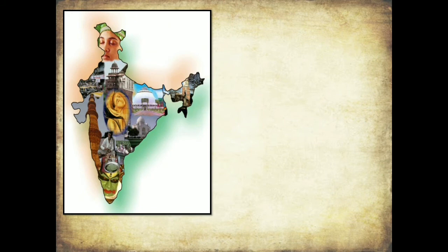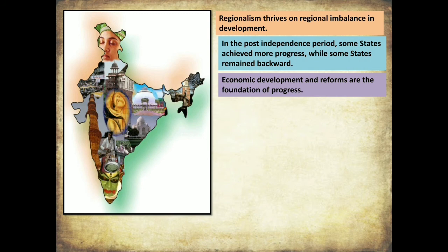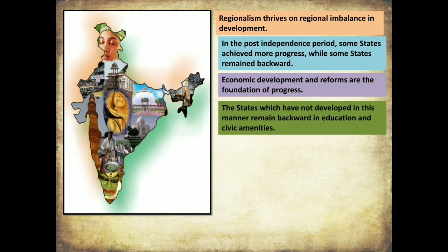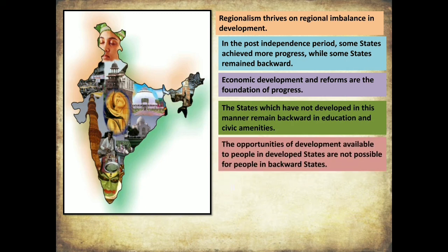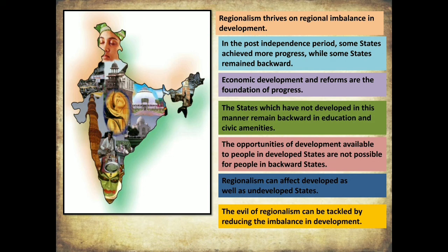In the post-independence period, some states achieved more progress while others remained backward. Economic development and reforms are the foundation of progress, and states that did not develop in this manner remained backward in education and basic amenities. The opportunities available in developed states are not accessible to people in backward states. The evil of regionalism can be tackled by reducing this imbalance in development.